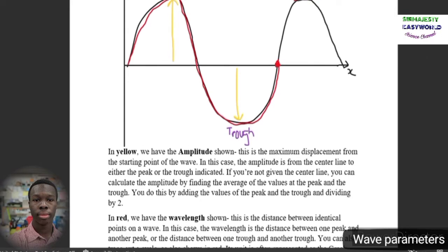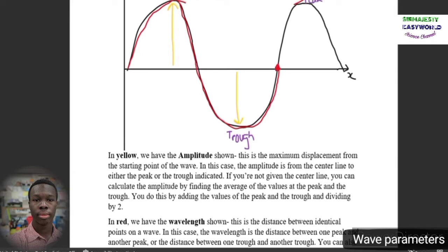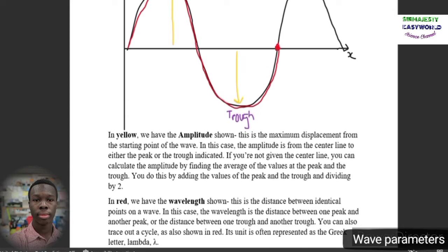Next up we have, in red, the wavelength which is indicated there. The wavelength is the distance between identical points on a wave, the distance between one peak and another peak or one trough and another trough. We can also trace out a cycle to indicate the wavelength. This has been traced out in red.